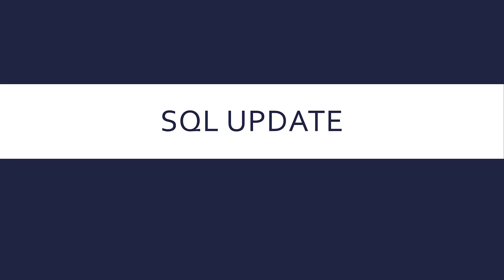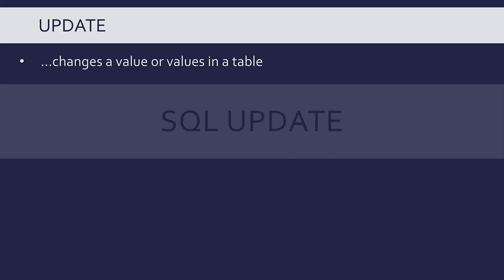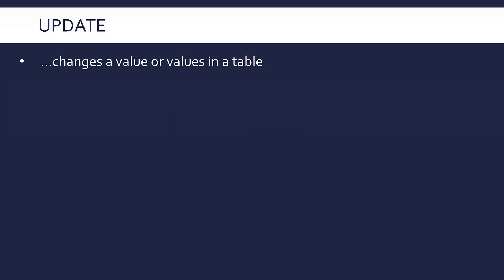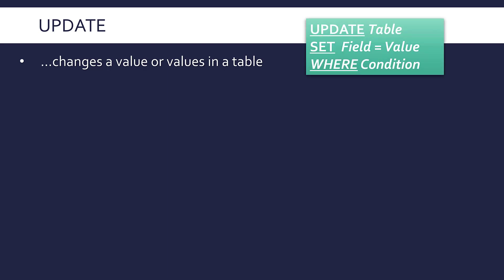Let's use SQL to change some values in a table — you do that using an UPDATE query. The syntax has three key parts. First, you say UPDATE (usually in capital letters), then the table name to specify what table you're changing, then you use SET, which is where you specify what change or changes you want to make.